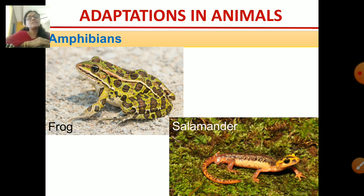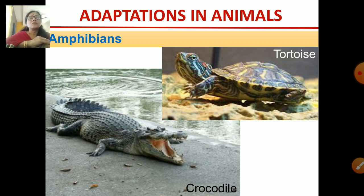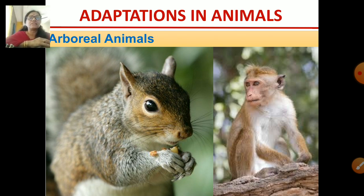These are the amphibians — animals which are able to live on both land and in water. The most common amphibian is the frog, which you see in many places. Another is the salamander. More amphibians are the crocodile and tortoise — these animals are also able to live on land and in water. When they are on land they breathe through their lungs, and while they are in the water they breathe through their moist skin.